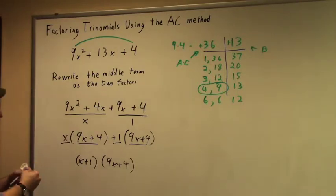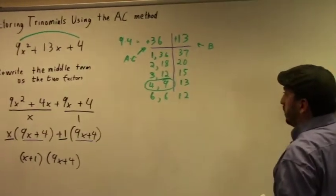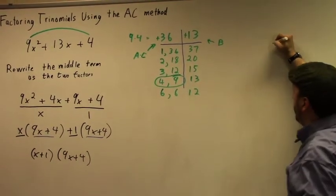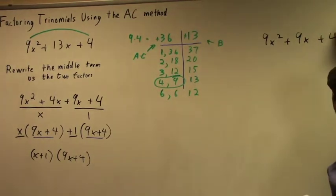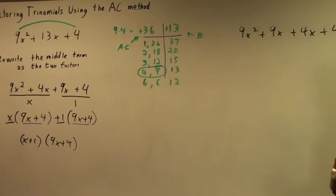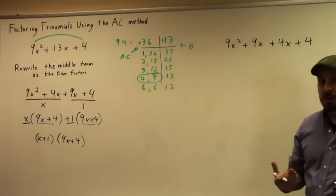Now let's suppose, for the sake of argument, that instead of doing it as 9x² + 4x + 9x + 4, I did it the other way. That's perfectly fine. That is not going to be a problem at all. You're still going to get the same answer.